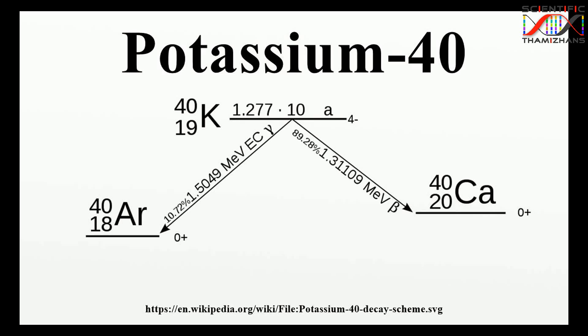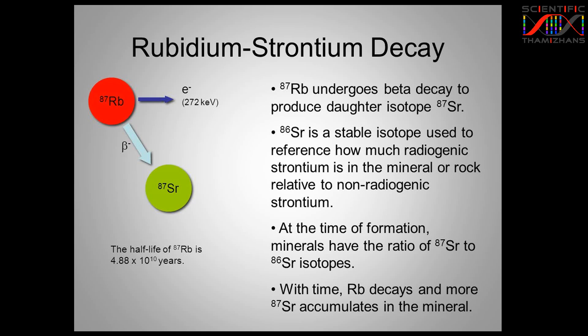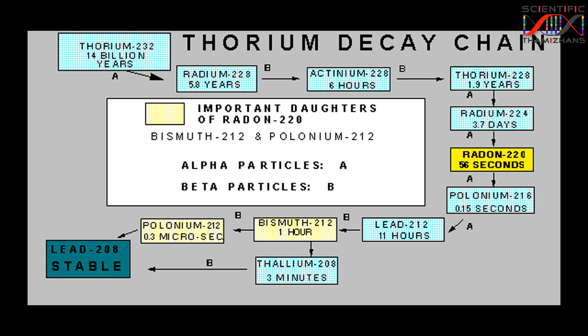There are also limitations for radiocarbon dating. For older materials, we can use potassium-40 and argon-40 dating, which has a half-life of 1.3 billion years. This allows us to date much older specimens using mass spectrometry.